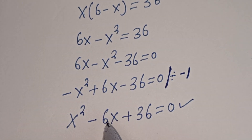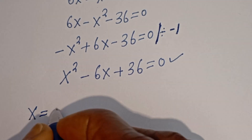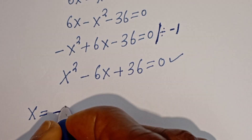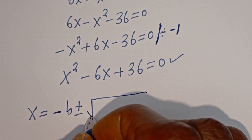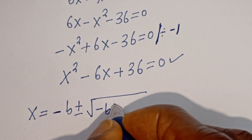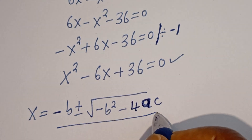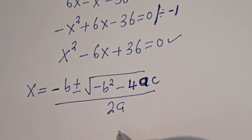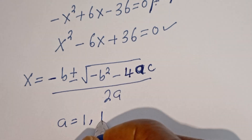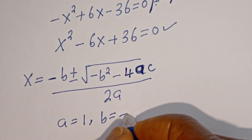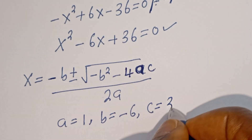We can solve this using the quadratic general formula. The quadratic general formula is: s is equal to negative b plus or minus square root of b squared minus 4ac, all divided by 2a. Here a is equal to 1, b is equal to negative 6, and c is equal to 36.